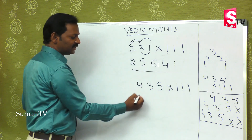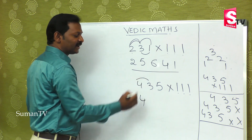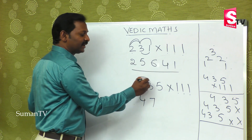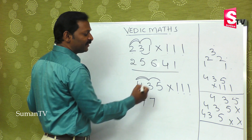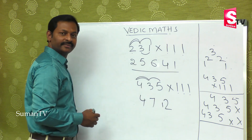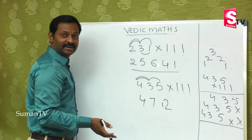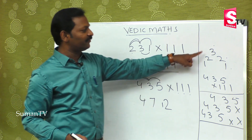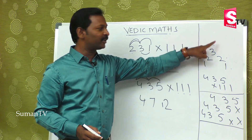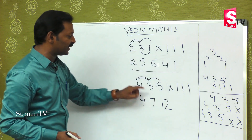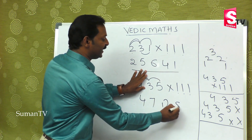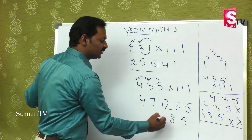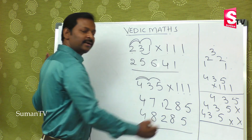Instead, here is the shortcut. First step: write the first digit, 4. Then 1st plus 2nd: 4 plus 3 is 7. Since we have 3 digits, add 1st, 2nd, and 3rd: 7 plus 5 is 12 — a double digit, so we balance it. The answer digits are 8 and 5. So the result is 4, 8, 2, 8, 5. This is the right answer.